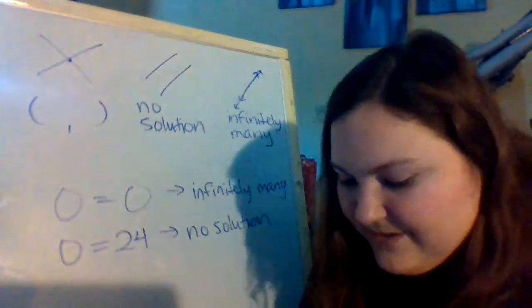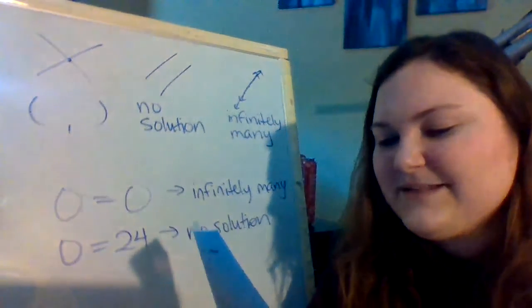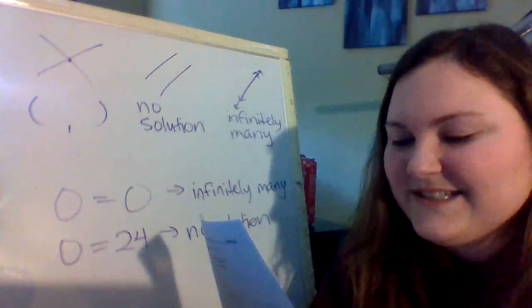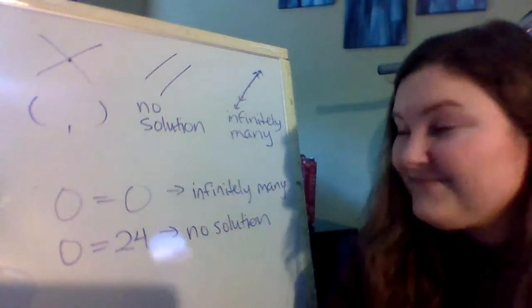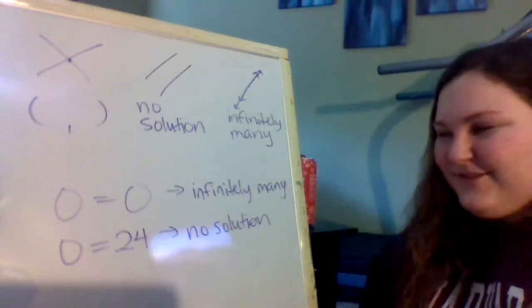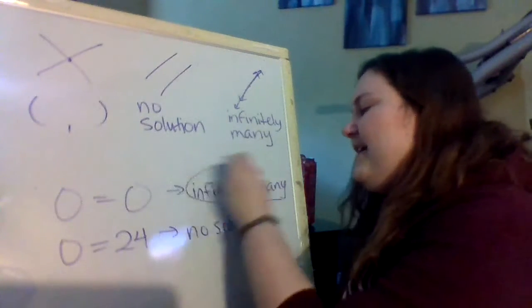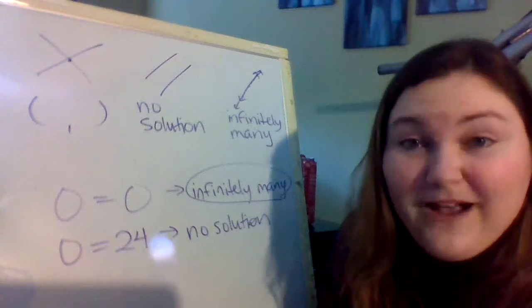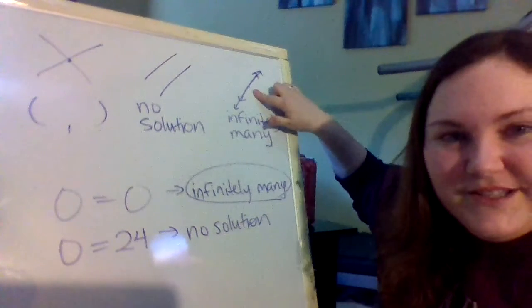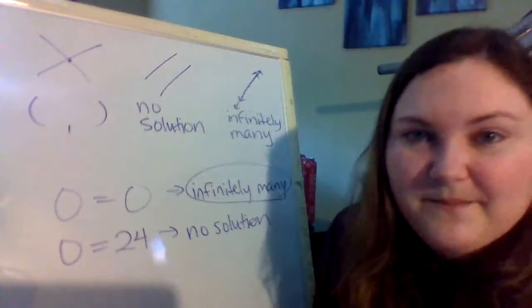So that one we were doing, number one, the one with 2x plus 3y equals 12 and 4x plus 6y equals 24. Our final answer would be infinitely many solutions. So that would be what you write for your answer. Infinitely many solutions, meaning if you were to graph both those lines, it would look something like this one here. It would be two lines on top of each other.